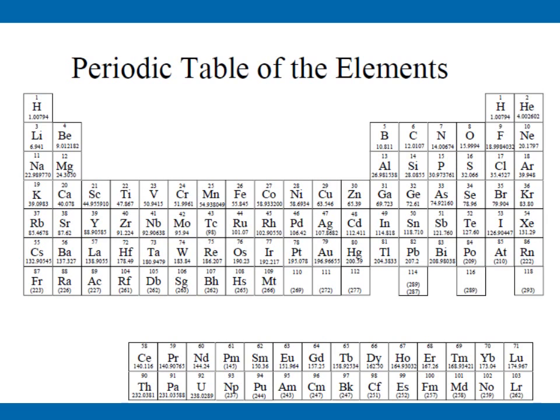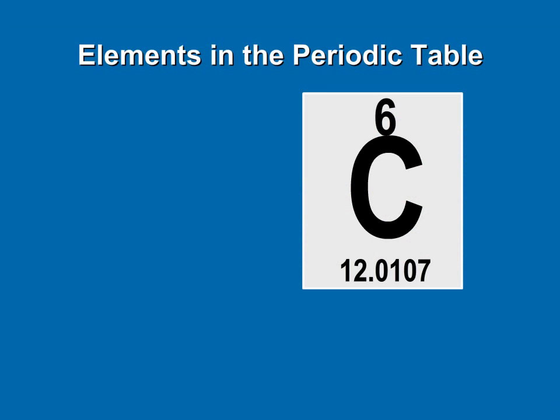The periodic table contains the 92 naturally occurring elements, as well as elements physicists have produced in the lab. If you have never used a periodic table before, it may look like a bunch of nonsense. But if you know how to read it, the periodic table contains some very useful information. See how each element is represented by a symbol in a little box? Let's look at one of the boxes.